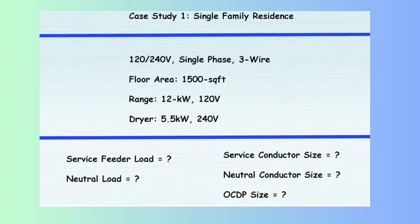In this case study, we are analyzing the electrical load requirements for a single-family residence, adhering to the 2023 NEC guidelines. The key parameters are as follows: the electrical system operates at 120-240 volts, single phase, with a three-wire configuration. The total habitable floor area of the residence is 1,500 square feet.